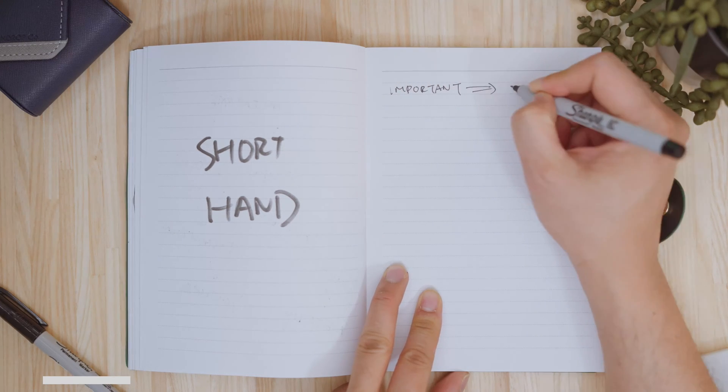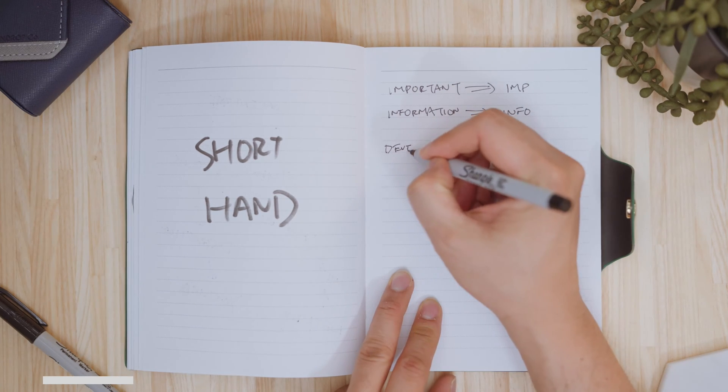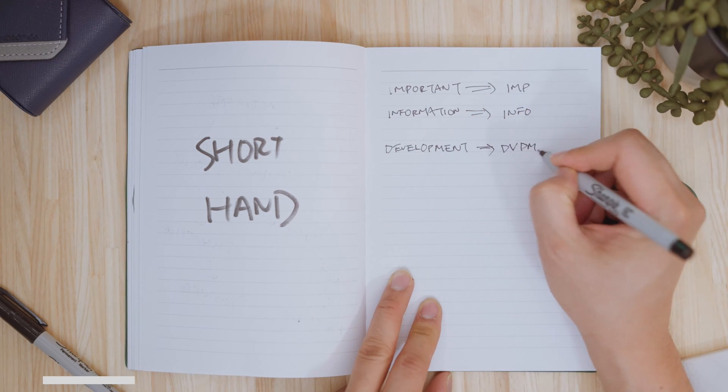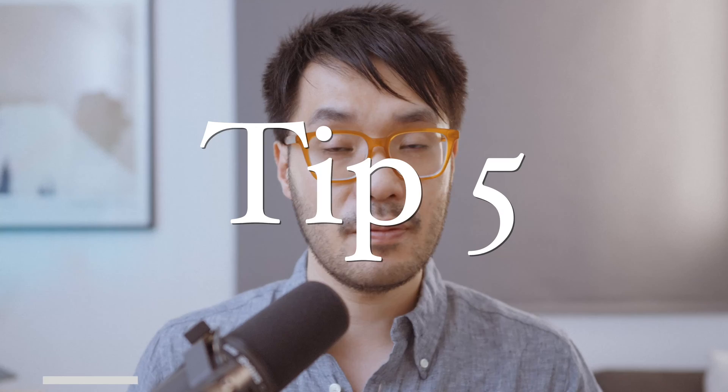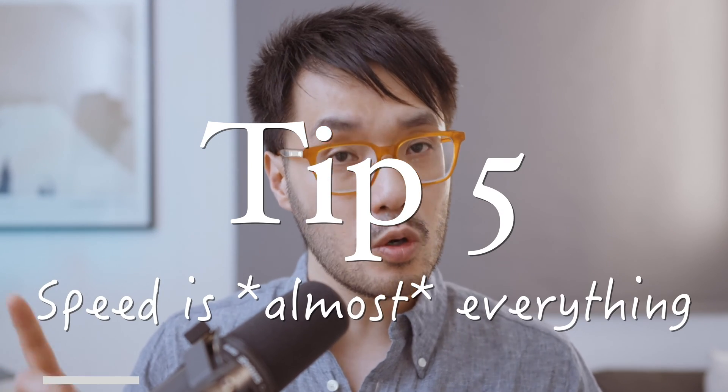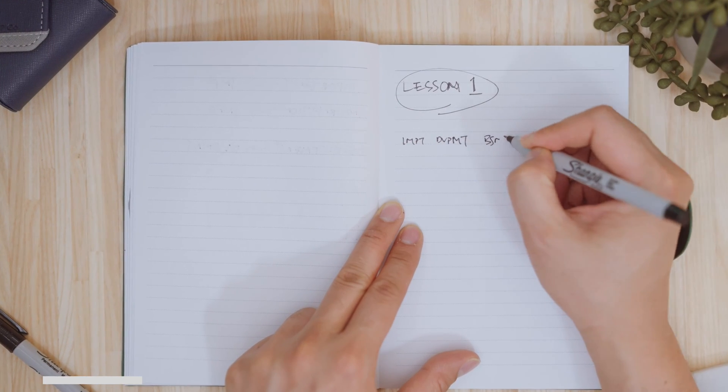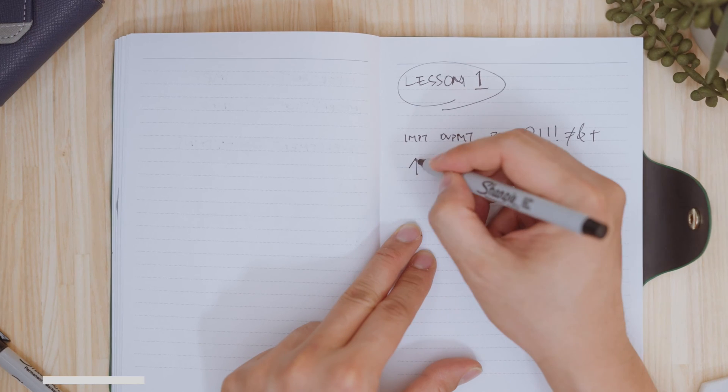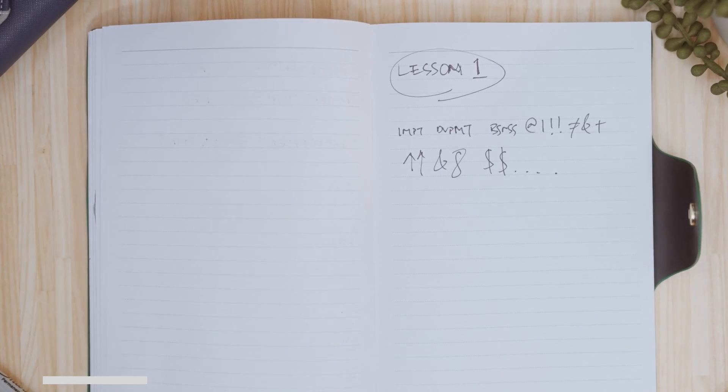Tip four: speed is everything. Develop shorthand and abbreviations for common terms so it's quicker to write and easier to read. Use the first few letters of a word or remove vowels, make use of common symbols and abbreviations. Tip five: but speed is almost everything. Mix and match longhand and shorthand note-taking and avoid specialized boutique symbols that only you know, because odds are you'll forget what they are come crunch time.